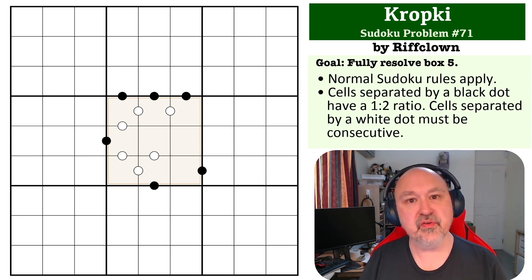The way the rules on this one work is: cells separated by a black dot must have a one to two ratio, or one must be double the other, and cells separated by a white dot must be consecutive.